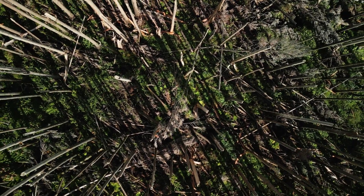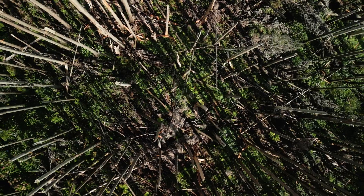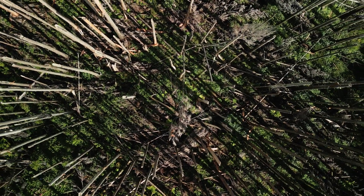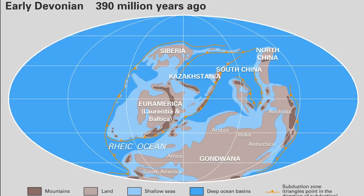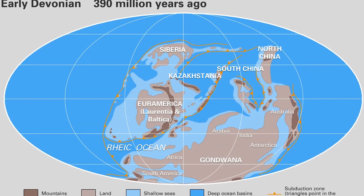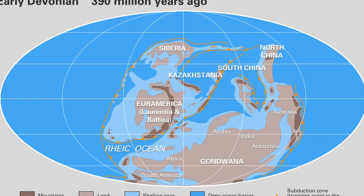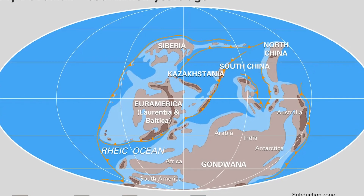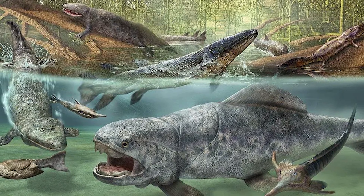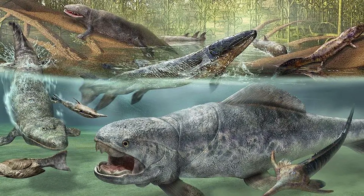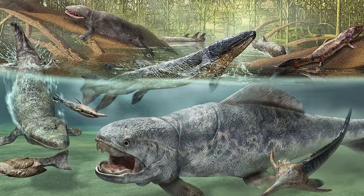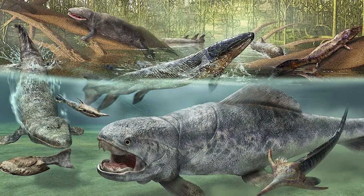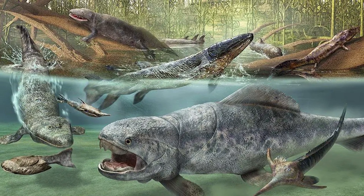This is a time in Earth's history known as the Devonian period, where vertebrate life on land was relatively rare, and fish dominated most of the ecosystems on Earth.